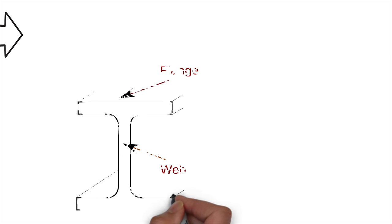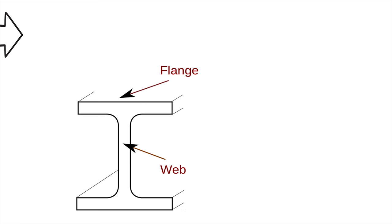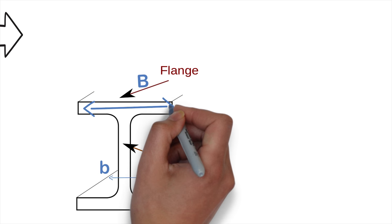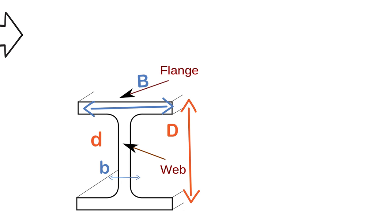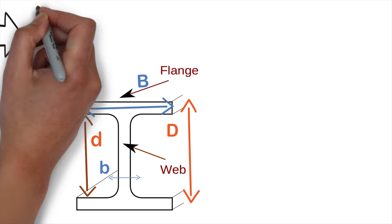The second is an I-section which is made up of two parts, two flanges and a web with capital B and small b denoting the breadth of flange and web respectively.